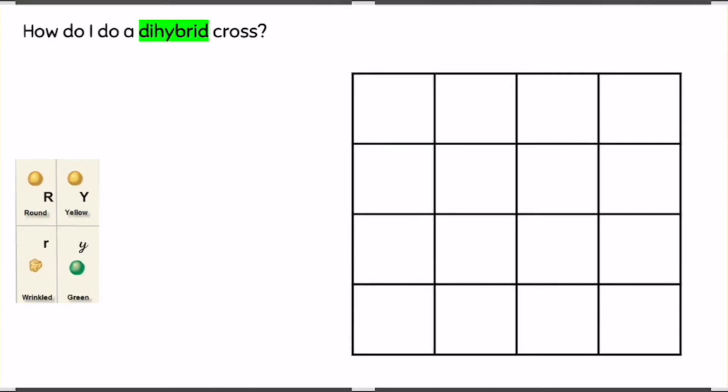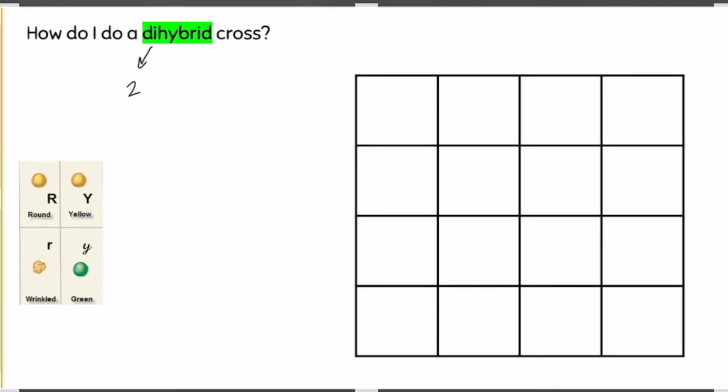How to do a dihybrid cross. Di means two, and hybrid we know to mean heterozygous. So we are crossing two heterozygous organisms, but they are both heterozygous for two different traits.